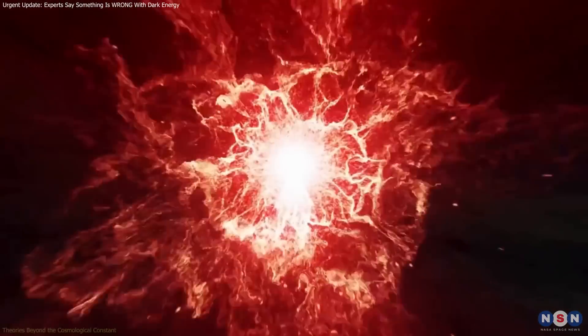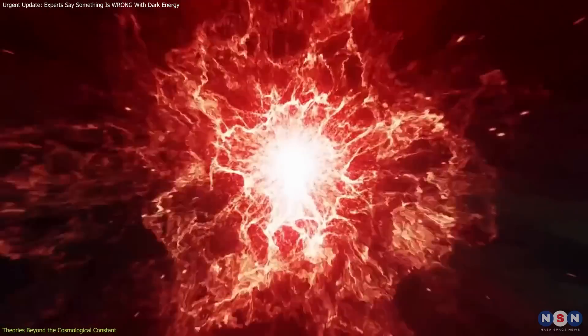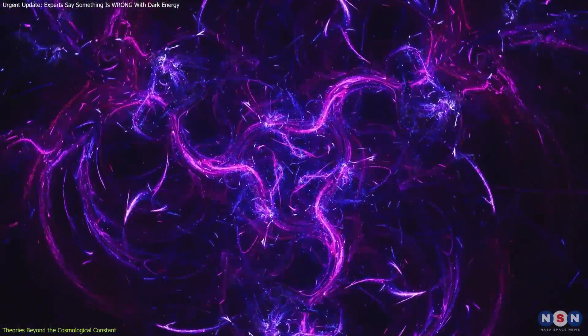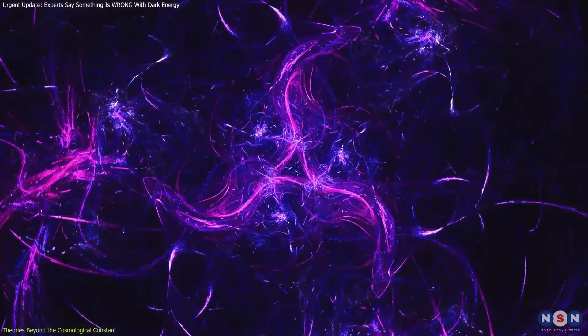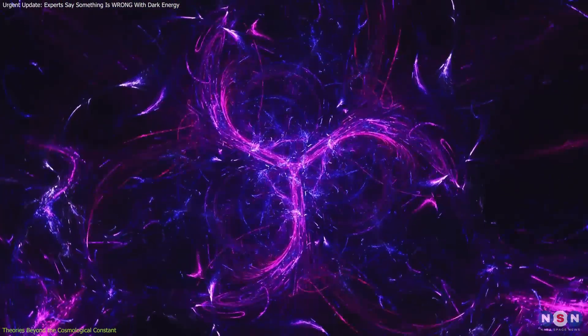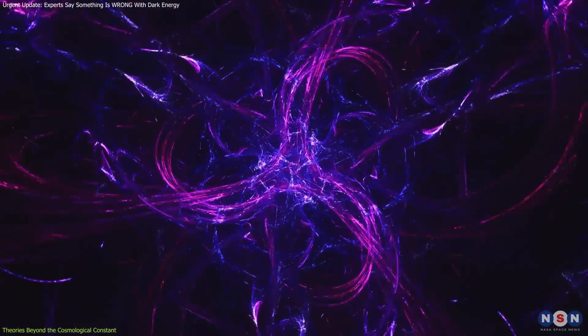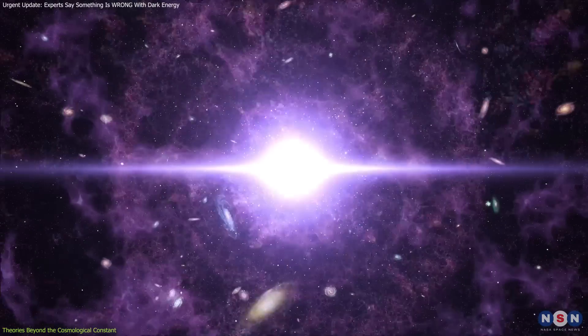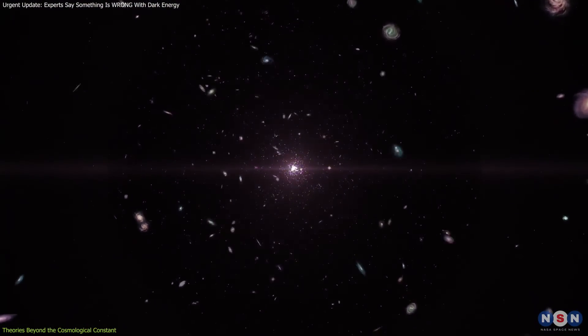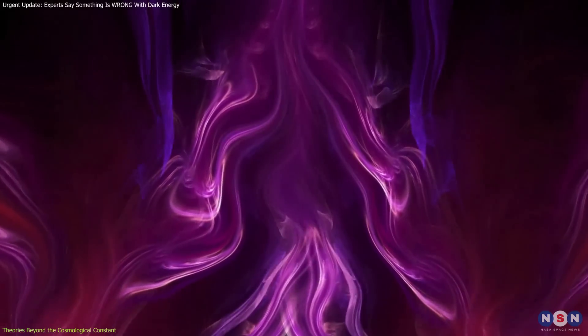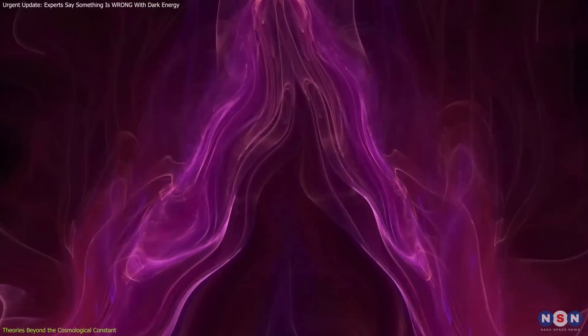If dark energy isn't constant, then what could it be? Several theories are being put forward by cosmologists. One of the possibilities is the concept of quintessence, which is a dynamic, fluid-like energy field that could evolve over time. Unlike the idea that dark energy has stayed the same since the Big Bang, this new concept suggests that dark energy could change and shift depending on the condition of the universe.